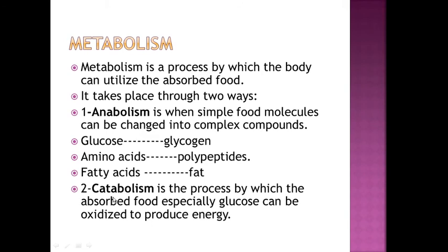Metabolism is a process by which the body can use the absorbed food, and it takes place through two ways. Anabolism is where simple food molecules are changed into complex compounds: glucose will be converted into glycogen, amino acids into polypeptides, and fatty acids into fats. Catabolism is the process by which the absorbed food, especially glucose, can be oxidized to produce energy.